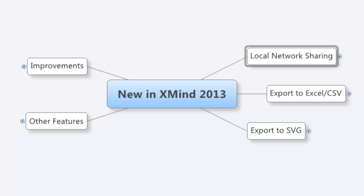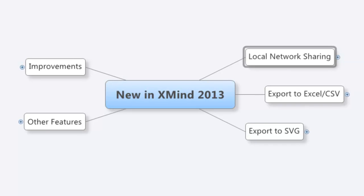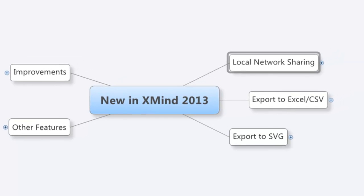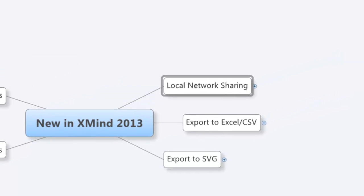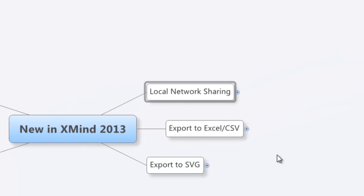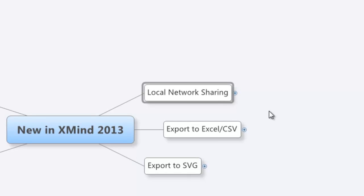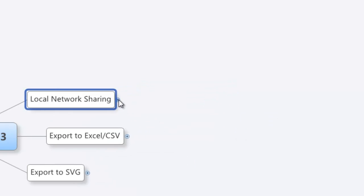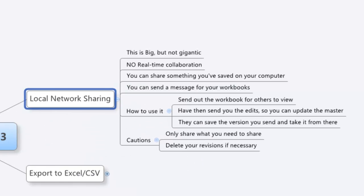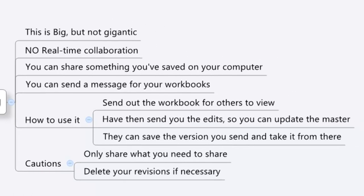The first thing I think most people have been asking for is the ability to share and to collaborate. They came up with something that is on the way — it's not quite 100% there but let's have a look at it. It's called Local Network Sharing. It allows you to share over a local network, so that could be your home network or a business network. This is not really sharing over the web, which they've got a bit of a version of.